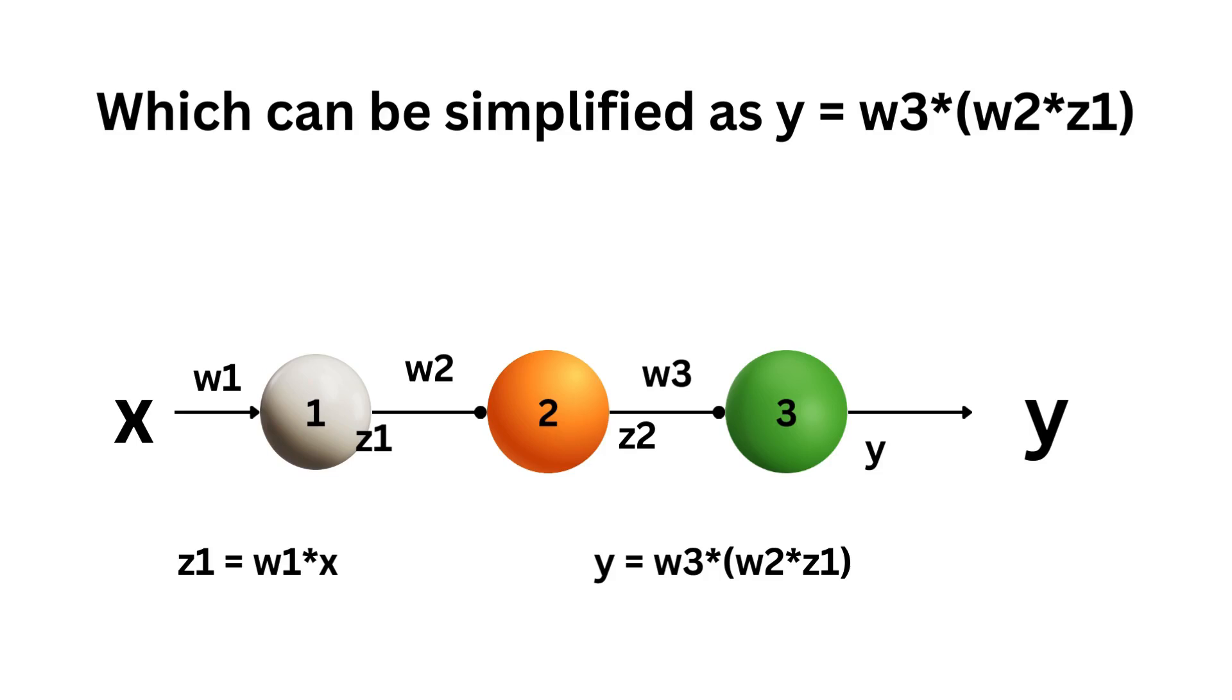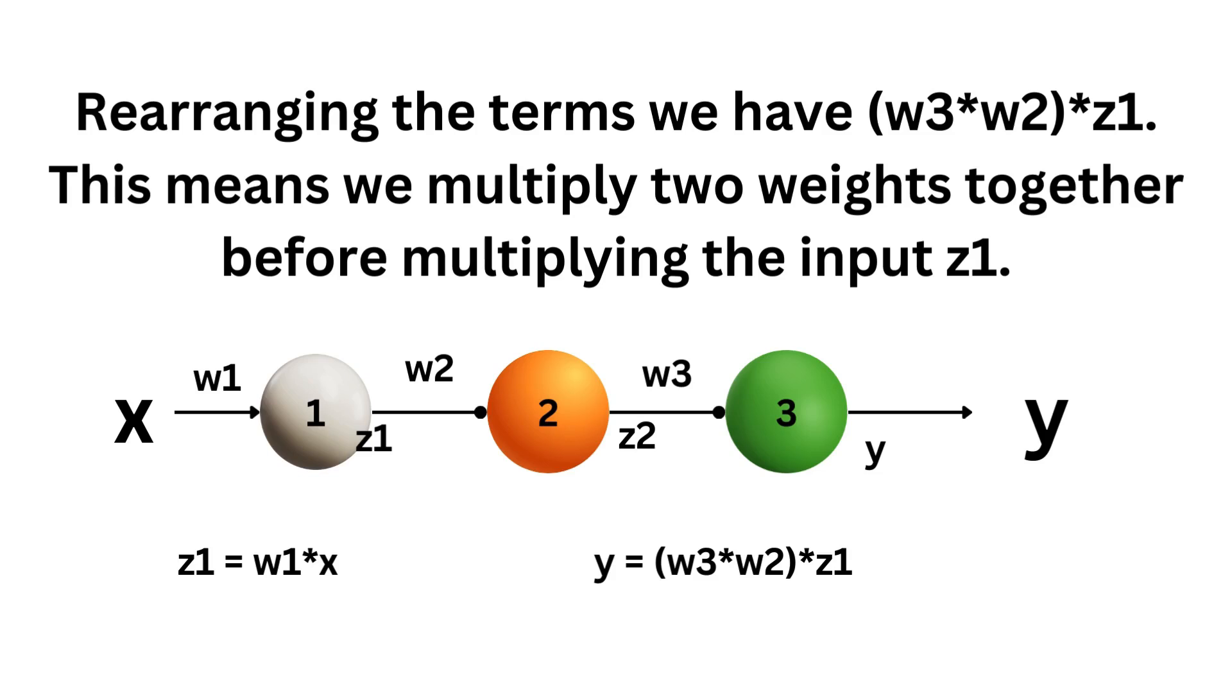which can be simplified as y equals w3 times w2 times z1 because z2 is w2 times z1. Rearranging the term, we have w3 times w2 times z1.